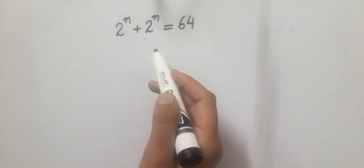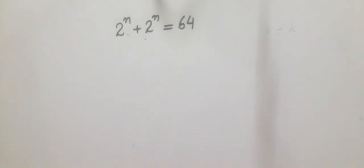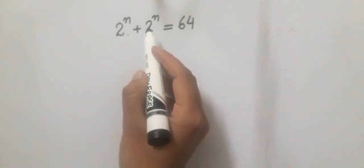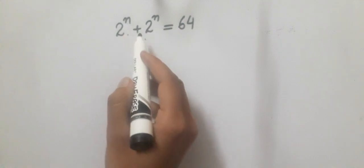So let's break it down quickly and see how we can find n. First of all, in this question we have noticed that two identical terms on the left hand side: 2 raised to power n and 2 raised to power n.